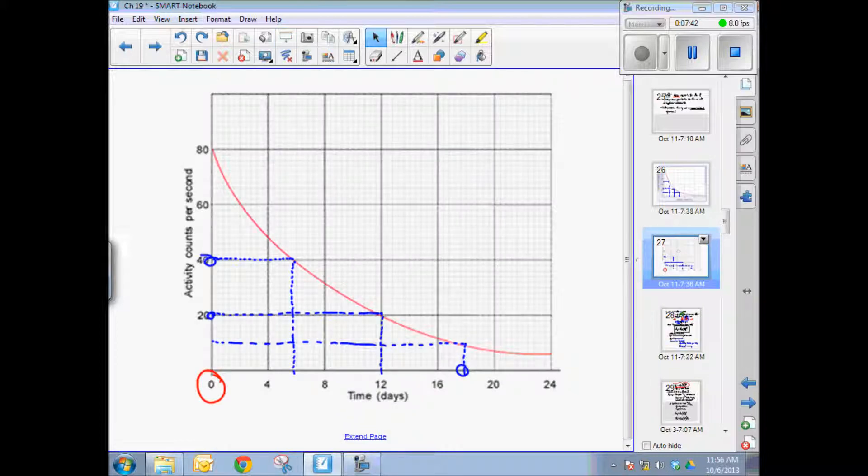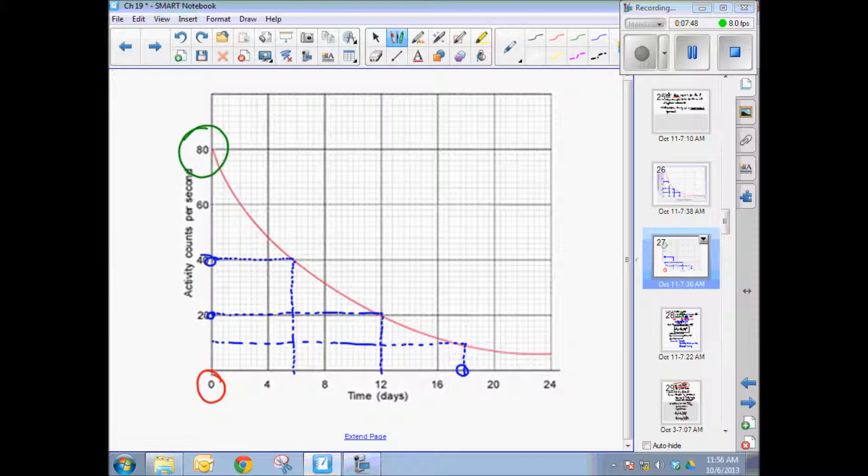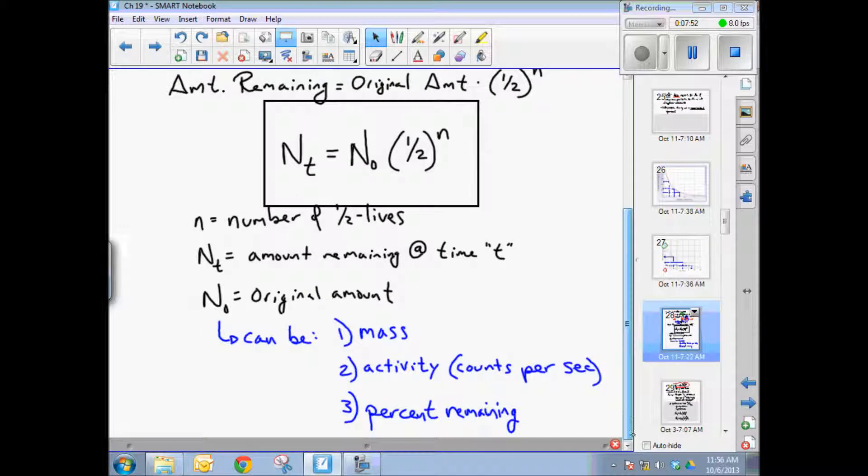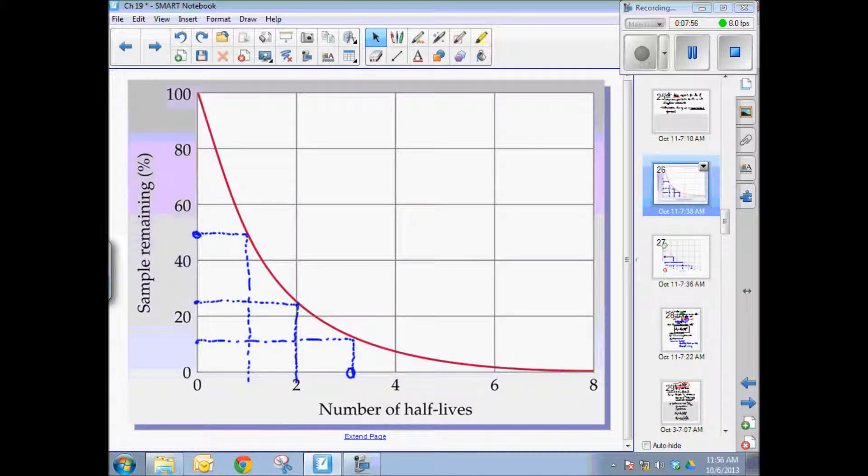Let me go back to this graph right here. This is an example of activity in counts per second. So we had an original amount of 80 counts per second. It can also be a percent remaining. And that was this graph right here, where we started with 100% and then some amount of time later, we were down to 50%, 25%, et cetera.